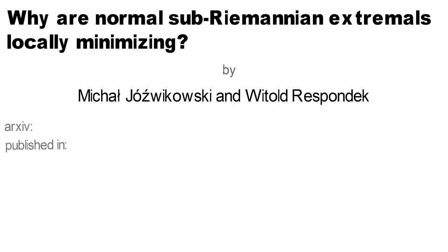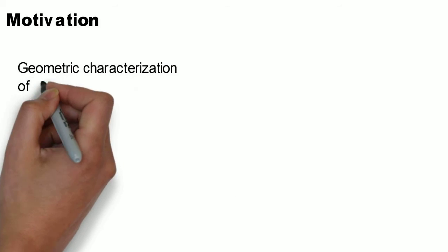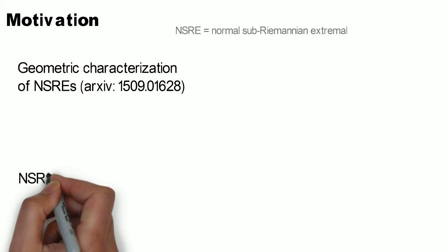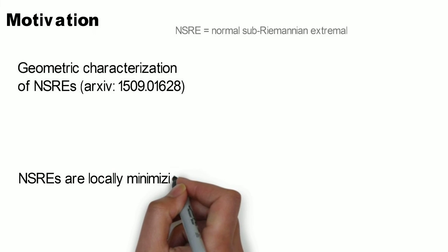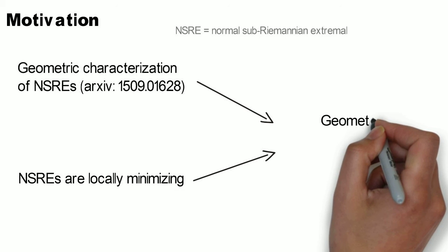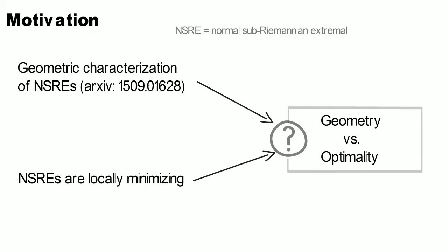Here is our motivation. In our previous publication we studied geometric conditions for optimality in Subriemannian geometry. In particular we gave a geometric characterization of normal Subriemannian extremals. On the other hand, it is well known that these extremals locally minimize the length or the energy functional. So we wanted to understand how the geometry is related with the local optimality.